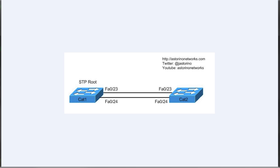Before we get into that, let's do a quick review and look at our example network diagram. Here we've got two switches, CAT1 and CAT2. We're going to want Catalyst1 to be the root bridge in our spanning tree topology. We've got redundant links between them on port 23 and 24, so we have a loop. One of these interfaces is going to have to go into the blocking state to stop the loop — the question is which one.